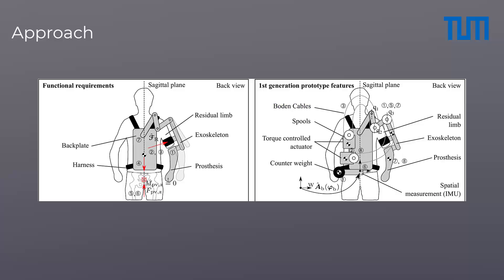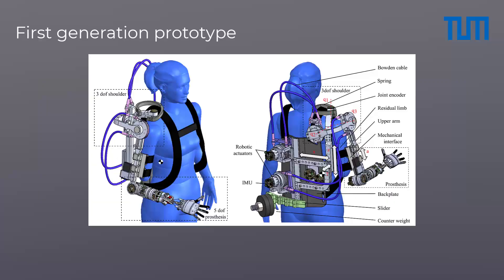The mechatronics concept includes torque controlled robotic actuators and an IMU to measure the spatial orientation of the device. Here you see the design realization of our first generation exoskeleton prototype. The actuators provide 60 Nm of joint torque and consequently much flexibility for lab experiments.